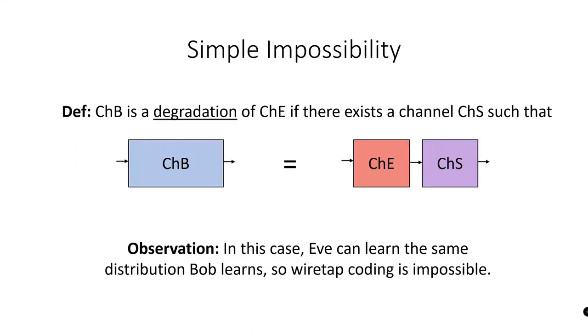We can characterize this by saying that channel B is a degradation of channel E if there exists some other channel, channel S, such that channel B can be written as the concatenation of channel E with channel S. Thus, whenever this is the case, we cannot build a secure wiretap coding scheme.